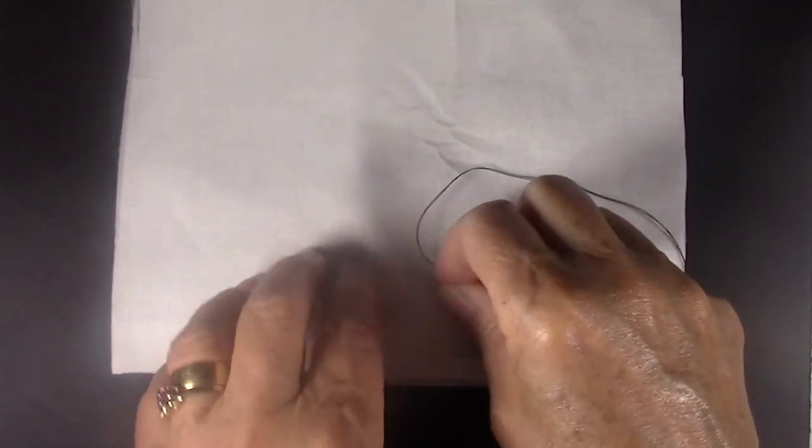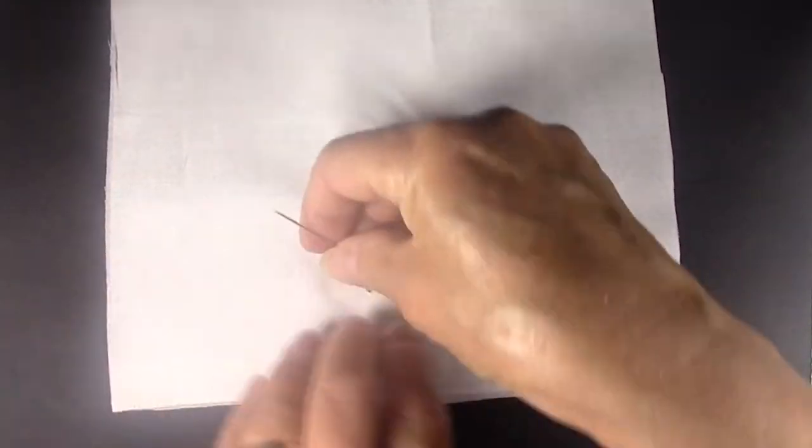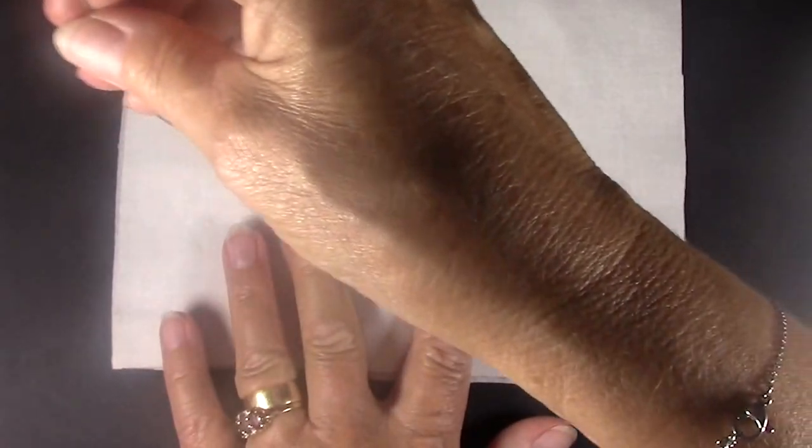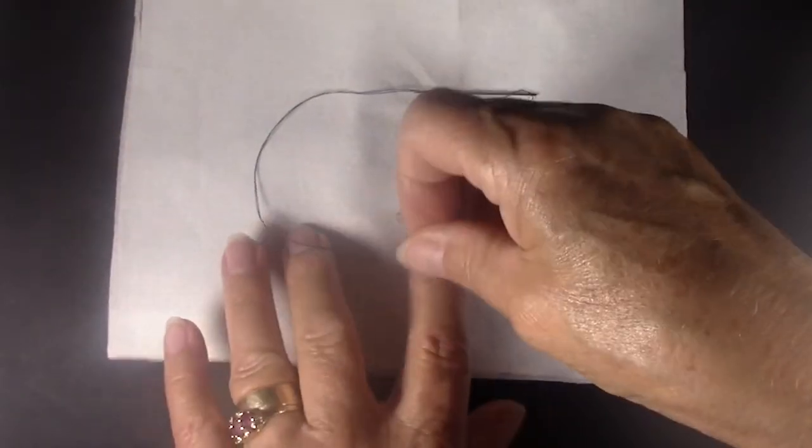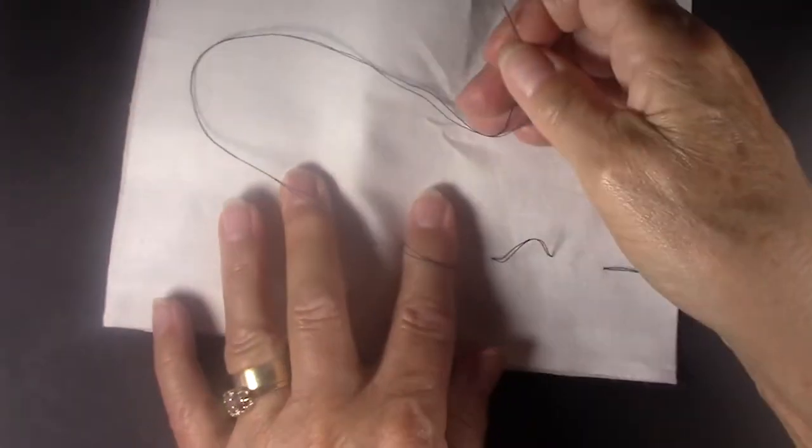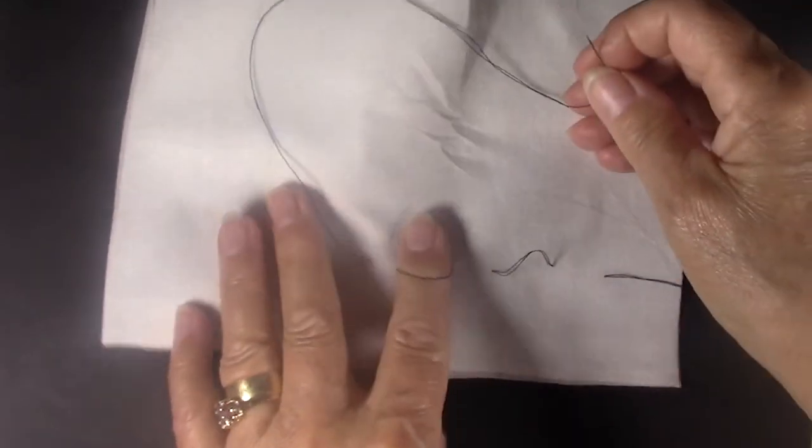I'm going to go over the same length. And this is where the wax really helps the thread. As you can see it's already starting to get a little uneven. So you can really fix it. Wax makes it easier to fix.